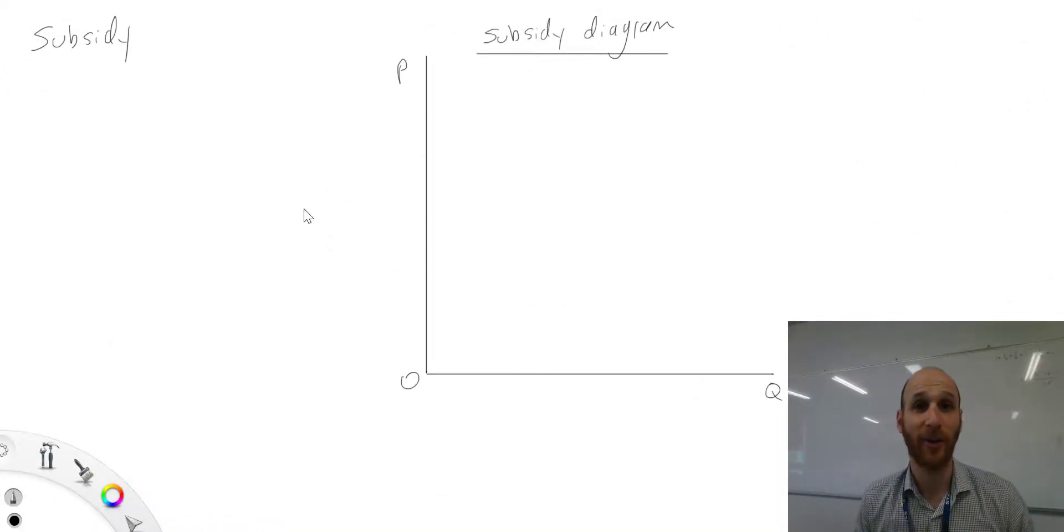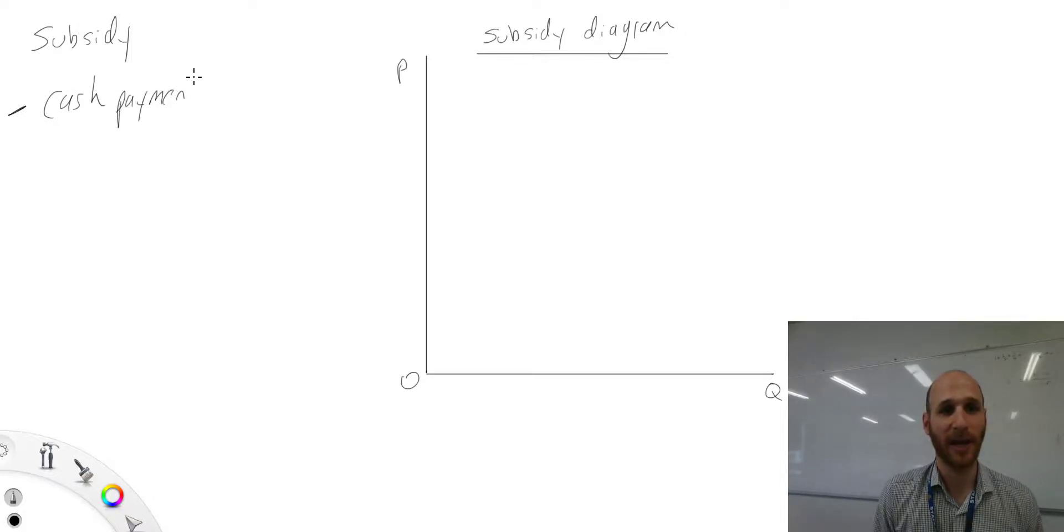In this video we're looking at subsidies - the basics of what a subsidy is and then how to draw the diagram. If we come over to the left side here, a subsidy is cash payments to domestic producers.